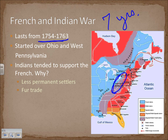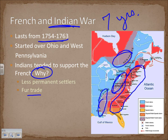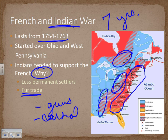The French and Indian War got its name from its main parties: the French as the opposition and the Indian alliances formed during the war. Most Indians tended to support the French because the French had fewer permanent settlers. France was heavily involved in the fur trade, and in return Indians received guns and Christianity through Catholicism. The British, by contrast, pursued a scorched-earth policy taking more and more land, so the French-Indian relationship was stronger.